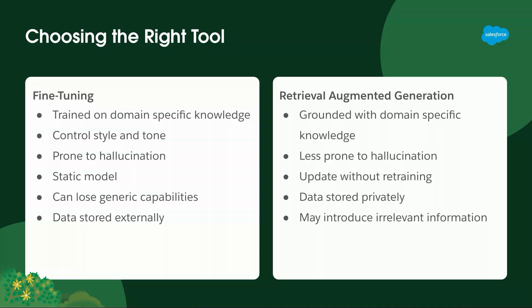The other approach to consider is retrieval augmented generation, which you've heard a lot about this week. RAG is grounded with domain-specific knowledge — not trained on it — so it's less prone to hallucination because the prompt contains so much information. You can update the grounding data without any retraining, and the data's stored privately because it always sits in your systems and is never stored anywhere externally. However, it may introduce irrelevant information by pulling in too much grounding content. Those are really the two technologies to look at for this kind of use case.